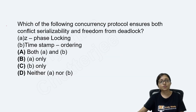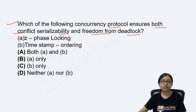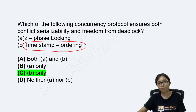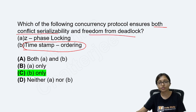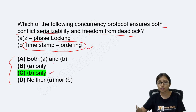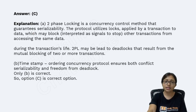The next DBMS question asked which concurrency control protocol ensures both conflict serializability and freedom from deadlock. The answer is timestamp ordering protocol. Only timestamp ordering ensures both conflict serializability and deadlock freedom. So whatever the options were, the answer will be timestamp ordering.